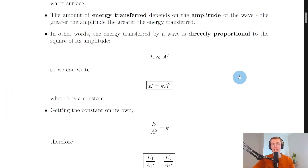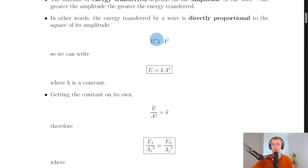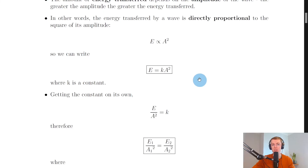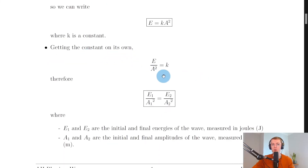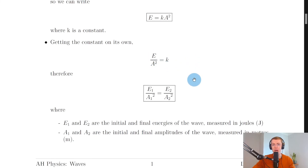Looking back at the notes, the energy transferred by a wave is directly proportional to the square of its amplitude. In symbol form: E is directly proportional to A², where E is energy and A is amplitude. We can write this as E = kA², where we replace the proportional sign with an equals sign and multiply by a constant k. Rearranging by dividing both sides by A² gives us E/A² = k. This is a constant, so we can introduce initial and final variables to get: E₁/A₁² = E₂/A₂².